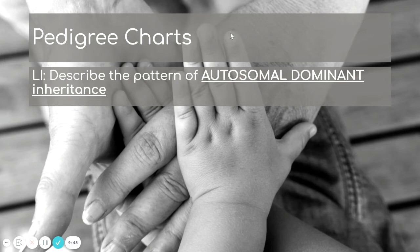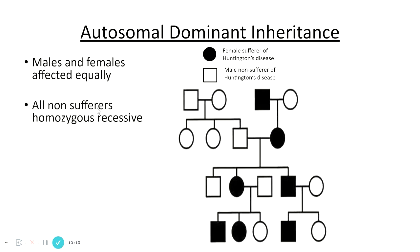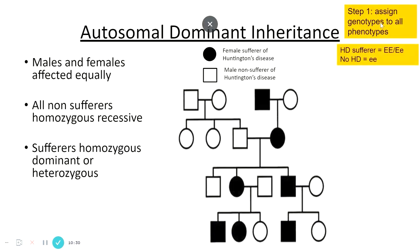The second type of inheritance pattern is autosomal dominant. Here the condition flips — it's passed on with a dominant allele, so a person is only unaffected if they have two recessive alleles. Males and females are equally affected because it's autosomal. All non-sufferers must be homozygous recessive, while sufferers can be homozygous dominant or heterozygous, meaning the condition will be much more prevalent within a family. Assign genotypes to as many phenotypes as you can.